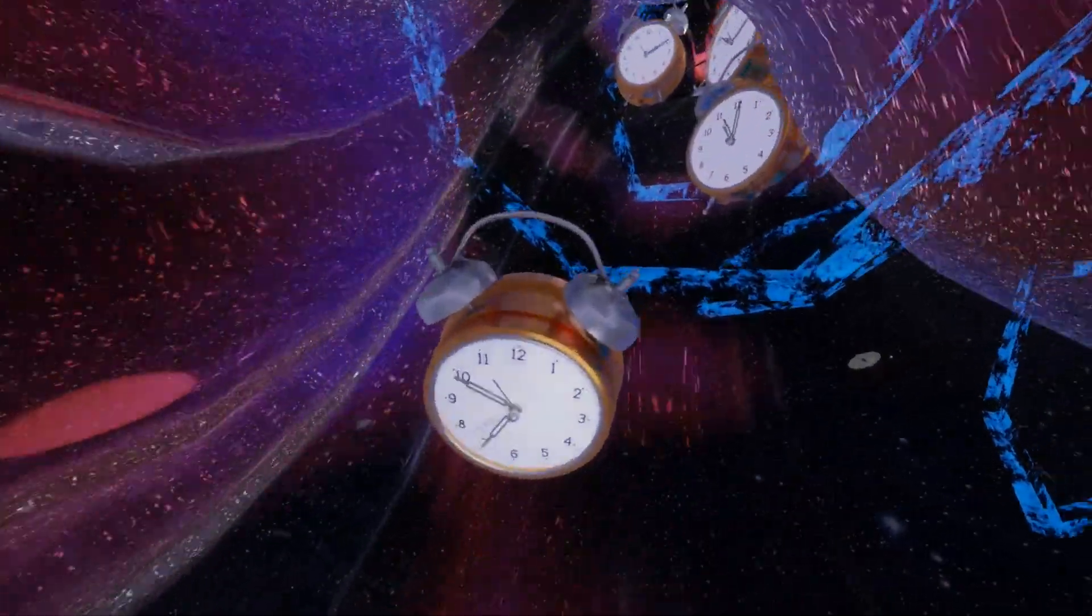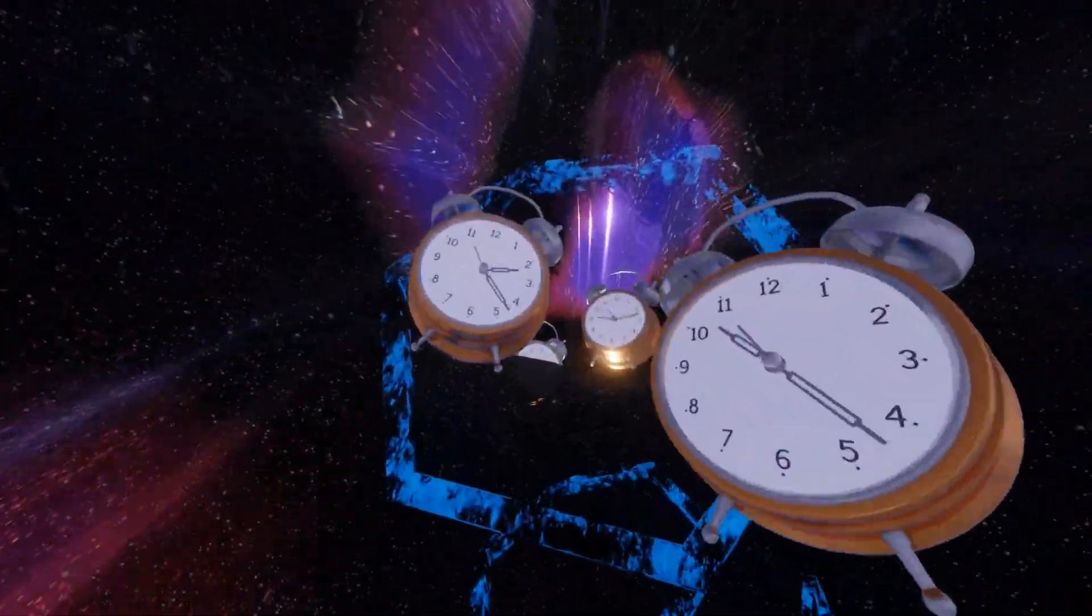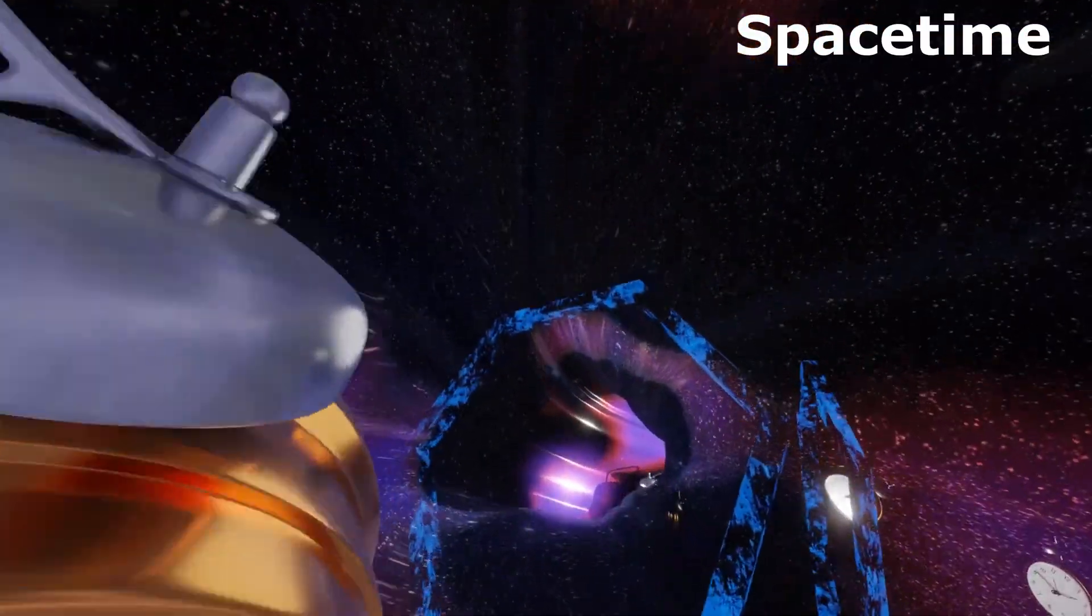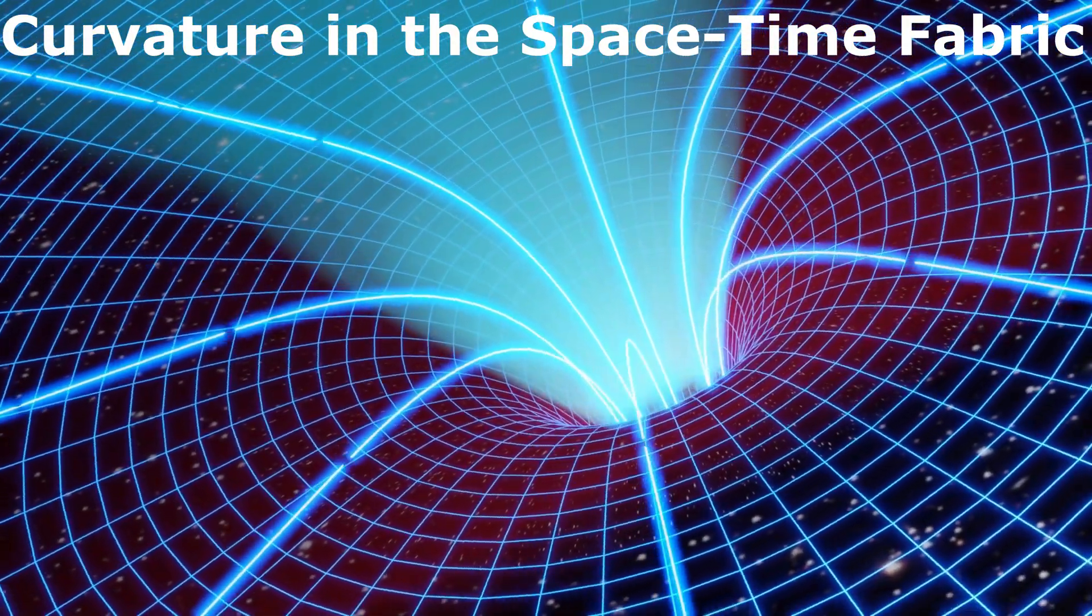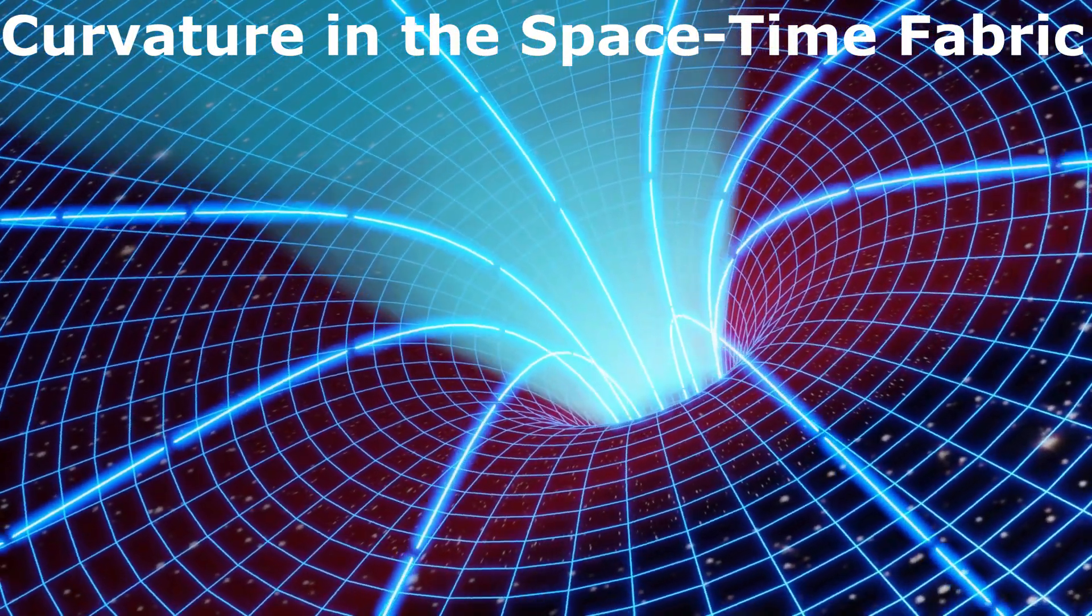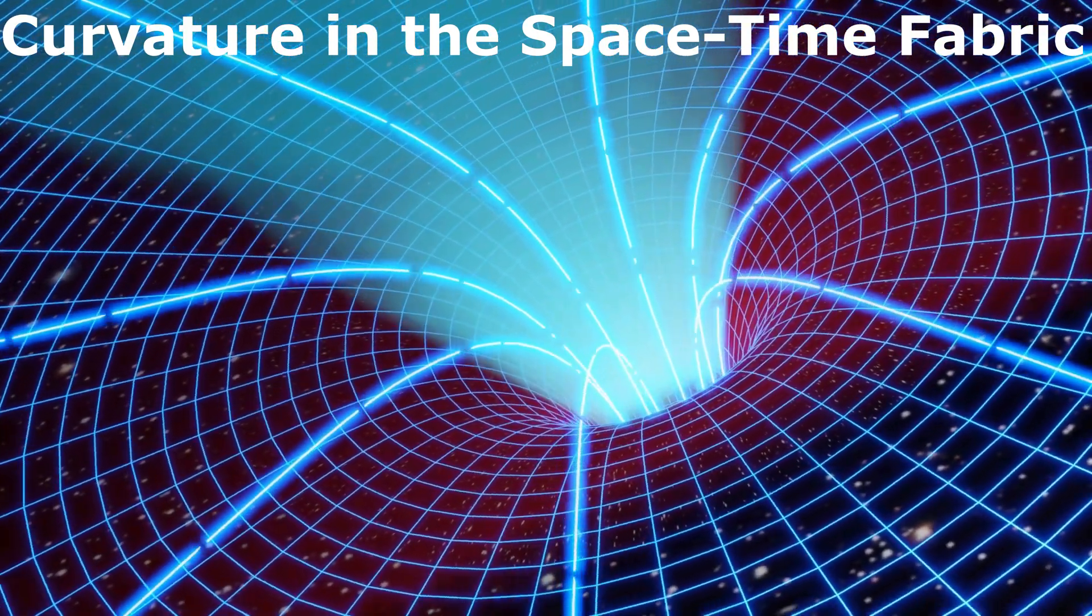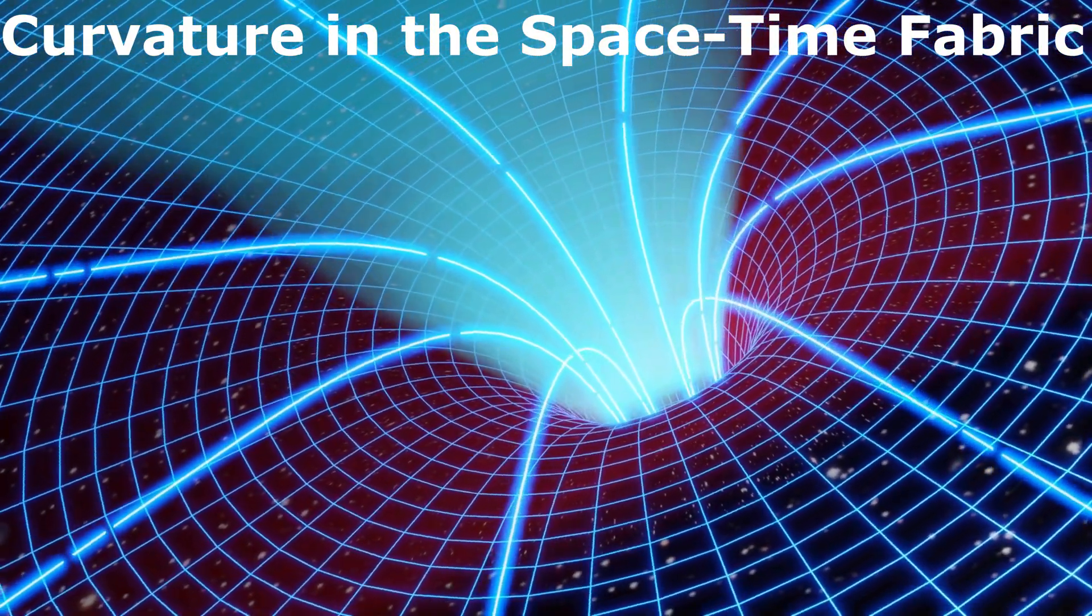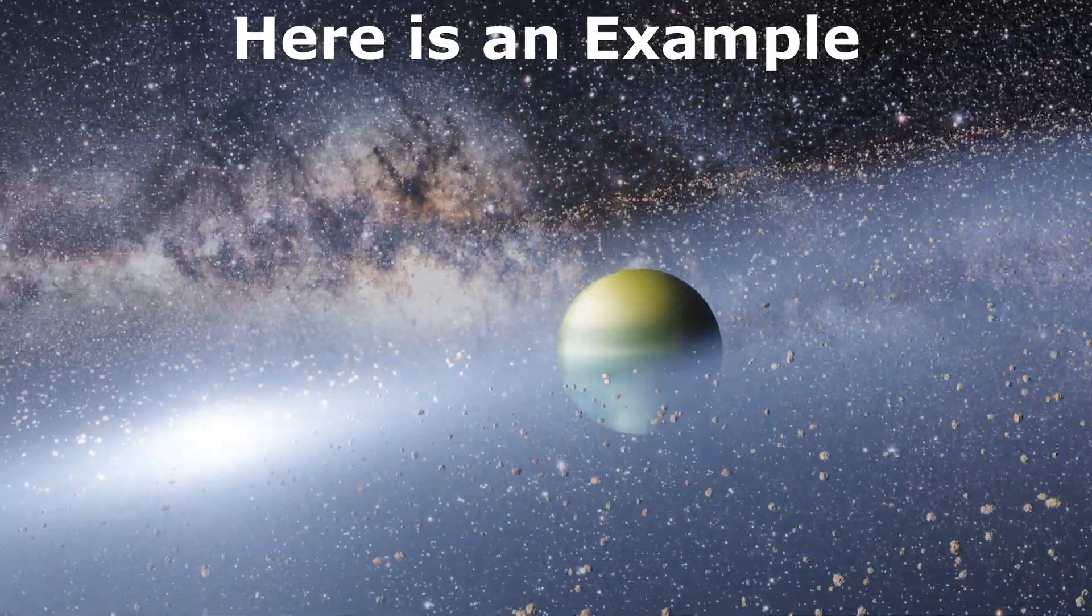According to Einstein's theory of relativity, space and time are linked together in what we call space-time. When space-time is curved, it changes how time flows. The deeper the dent, the greater the curvature and more pronounced the effect on time. Let's use an example to make it clearer.